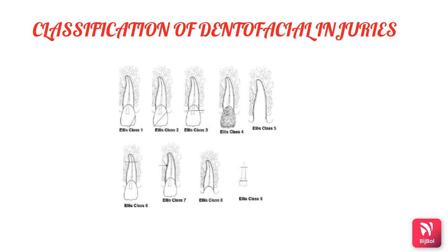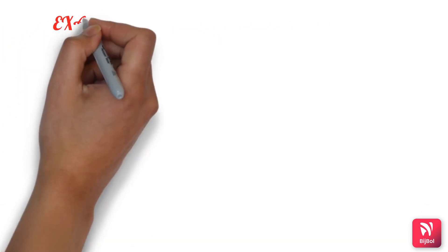Class 7 is displacement of the tooth without crown or root fracture; Class 8 is fracture of the crown en masse; and Class 9 is fracture of the deciduous tooth. This completes the Ellis and Davis classification.